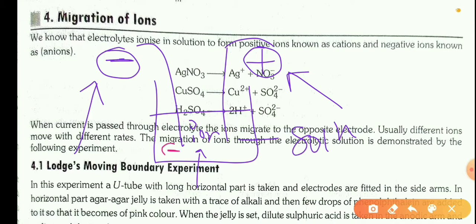If negatively charged ions are here and positively charged ions are here, then on applying electric current, negatively charged ions will move towards the positive electrode and positively charged ions will move towards the negatively charged electrode. This is called migration of ions.